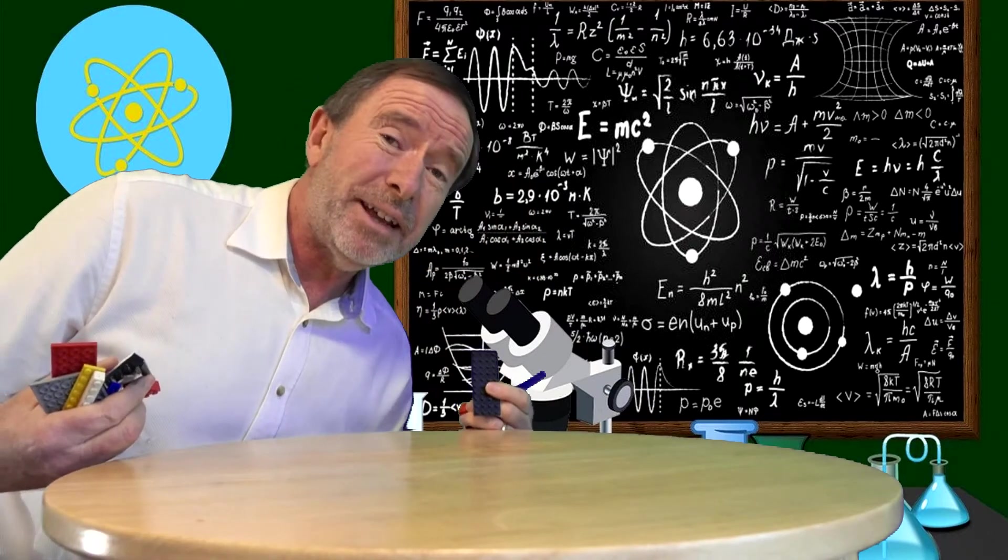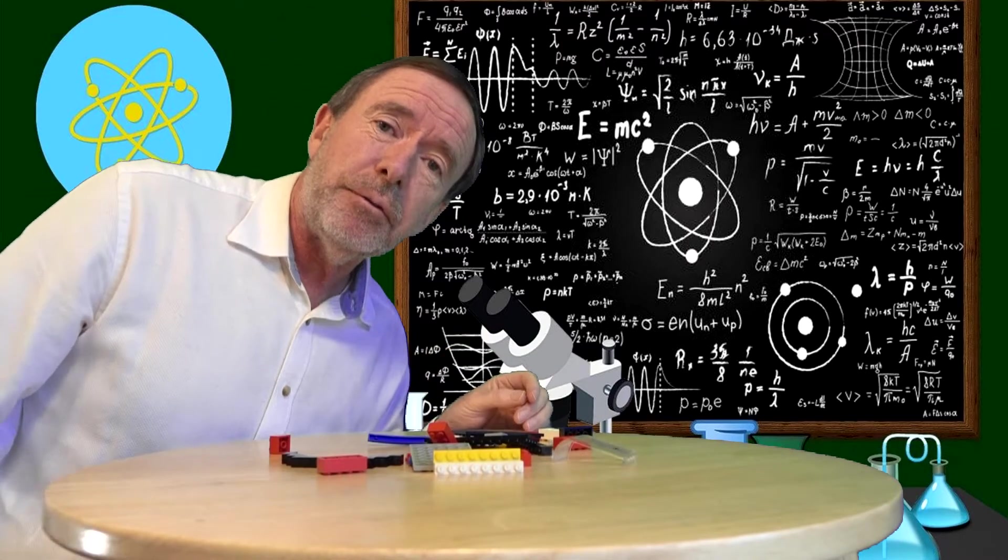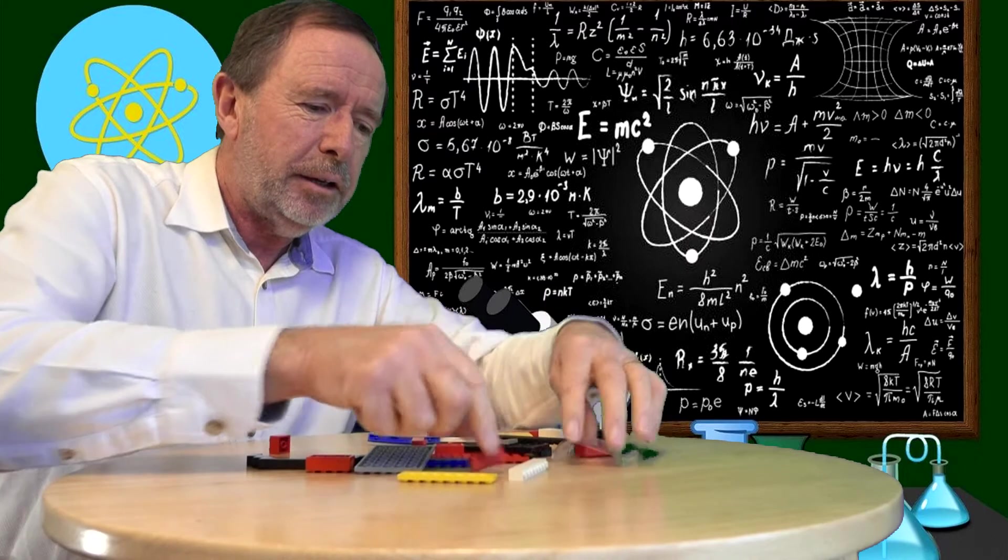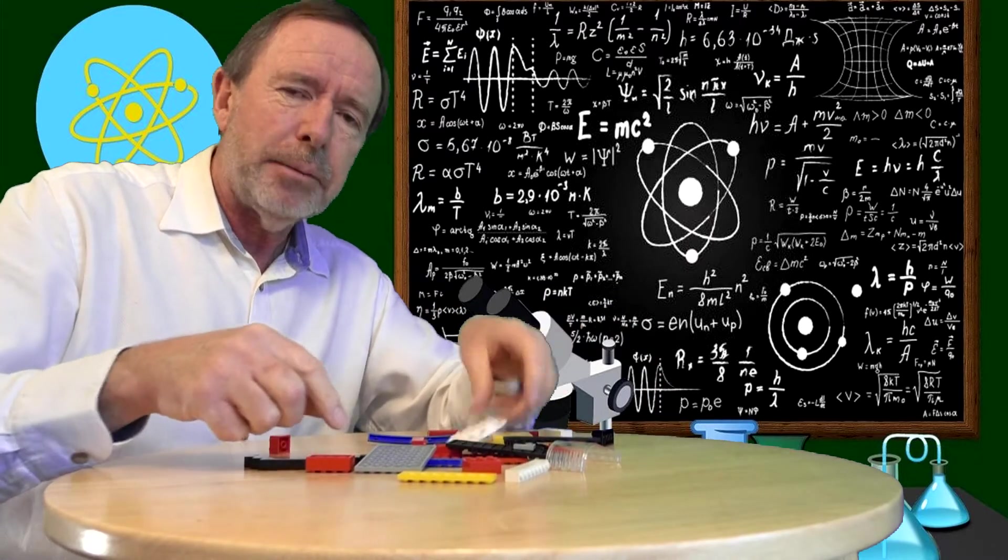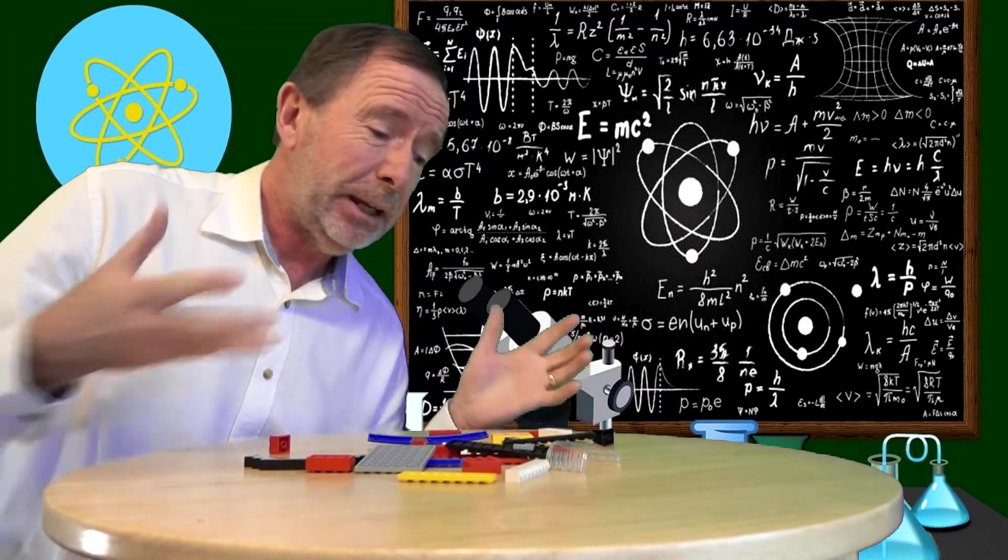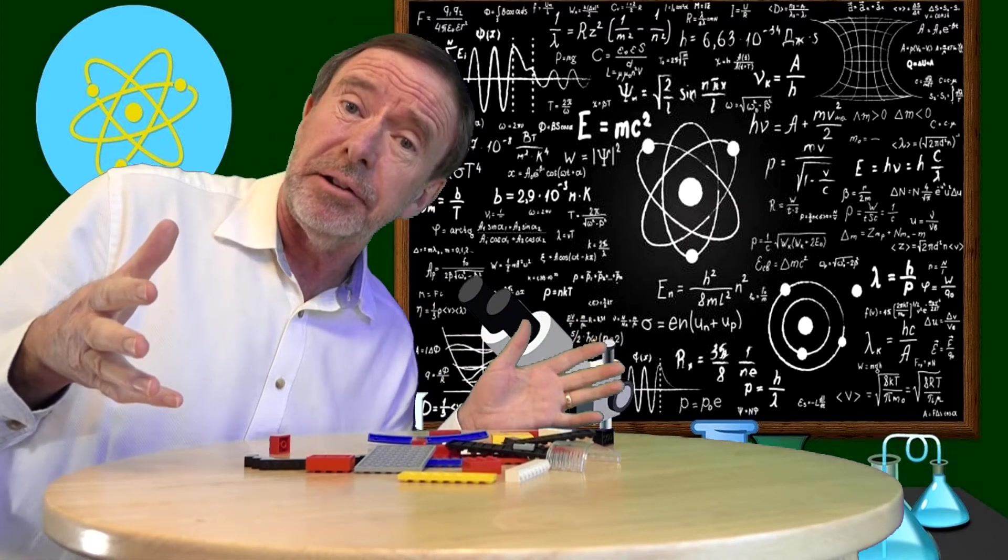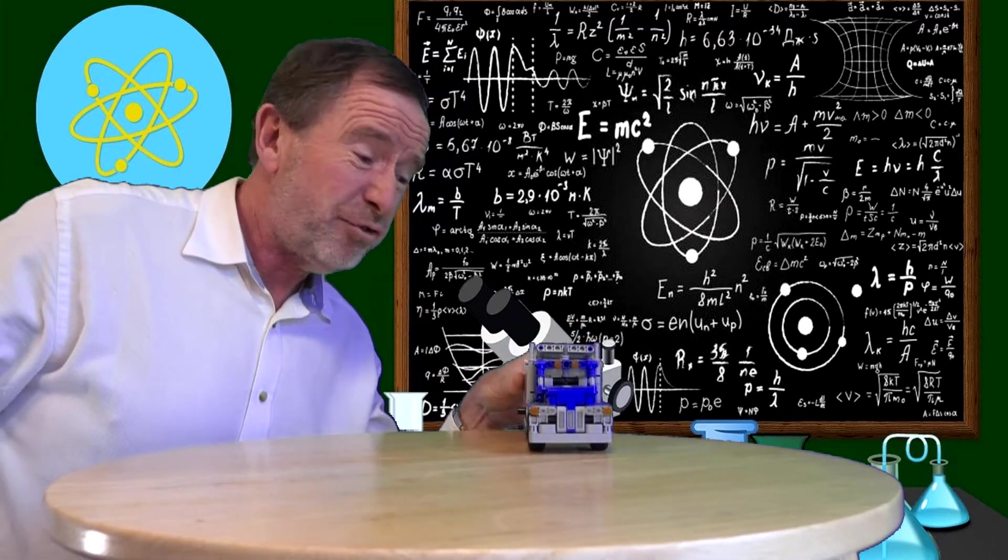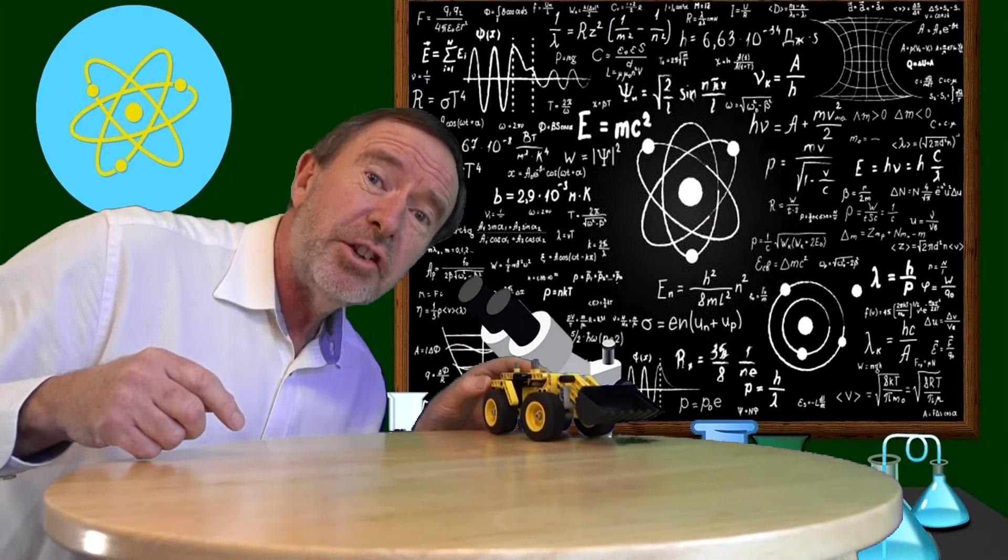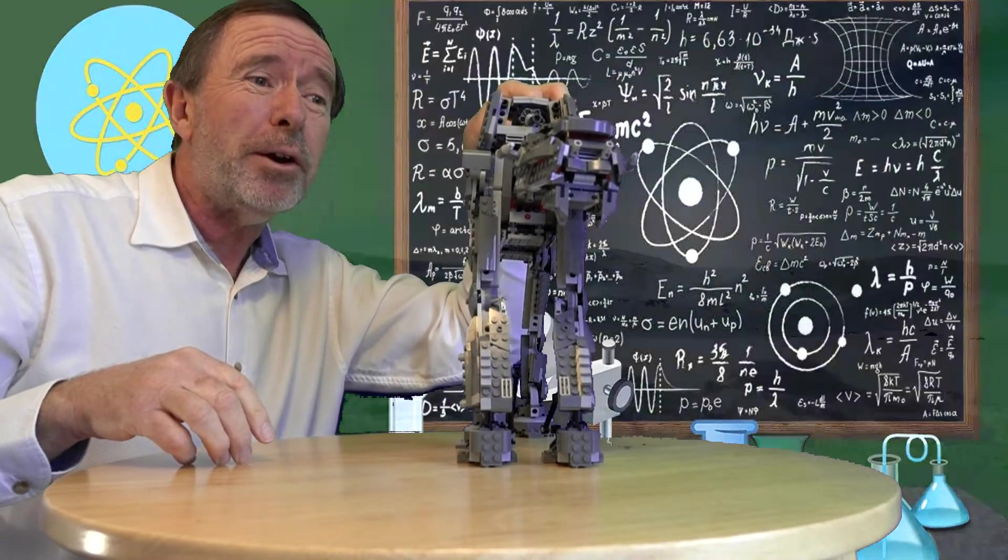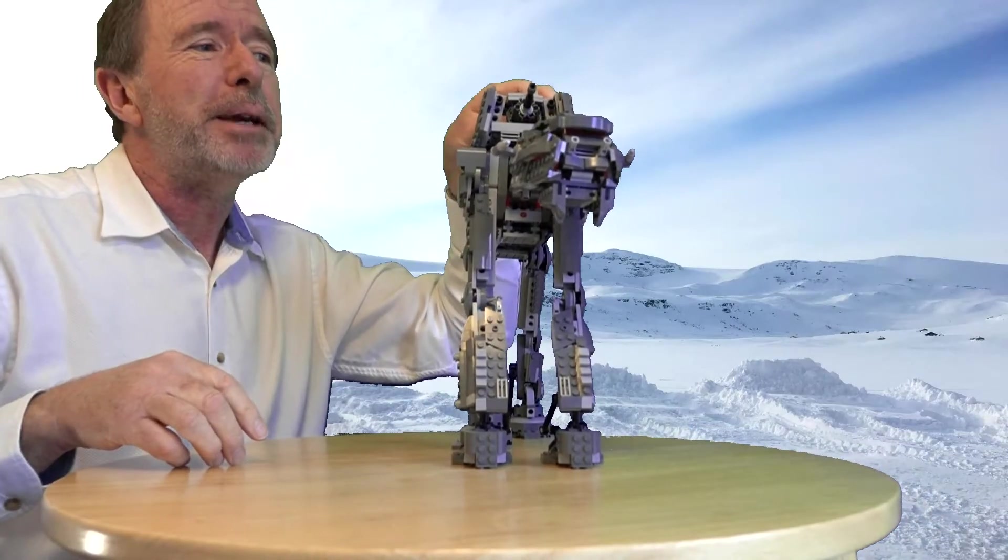Think of this a different way. Here's a whole load of different bits of Lego, different shapes and different colours, and I can put those together to make lots and lots of different types of models. I could use them to make a truck, I could use them to make a digger, I could even use them to make an imperial walker.